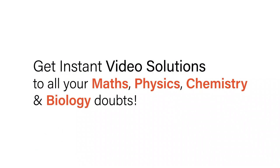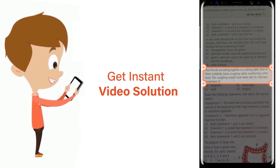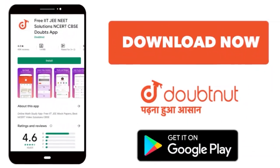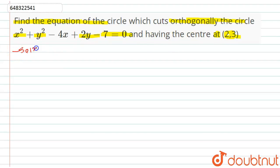With Doubtnut, get instant video solutions to all your maths, physics, chemistry, and biology doubts — just click the image of the question, crop it, and get an instant video solution. Download the Doubtnut app today. Hello students, the question is: find the equation of the circle which cuts orthogonally the circle x² + y² - 4x + 2y - 7 = 0, and having the center at (2, 3).